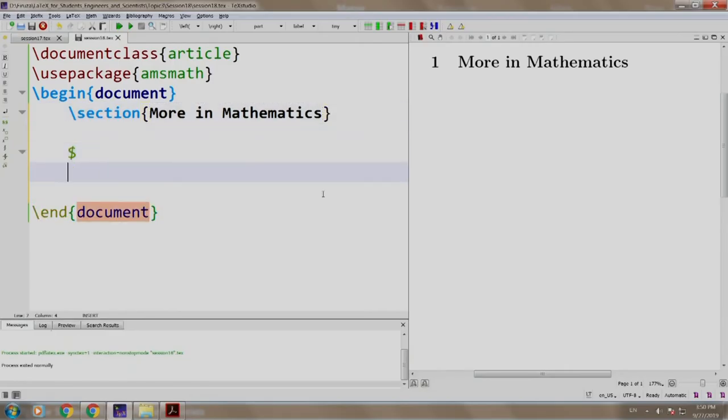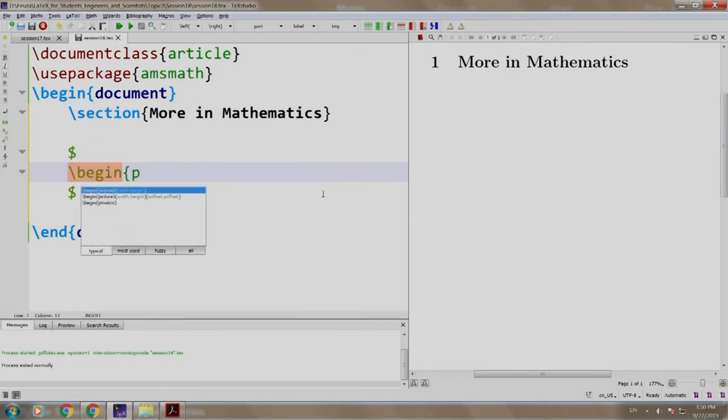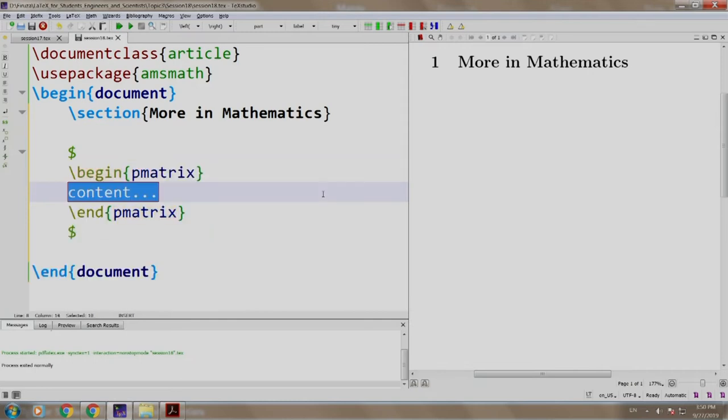We first write dollar and dollar to indicate it is a mathematical mode and then we write slash begin P matrix and we write our content as 1 ampersand means I need to take another column. So I write 2